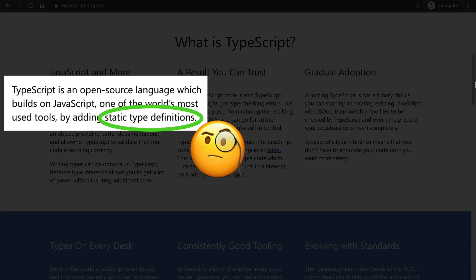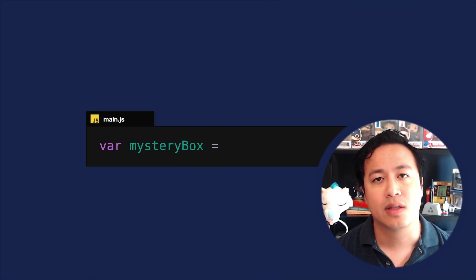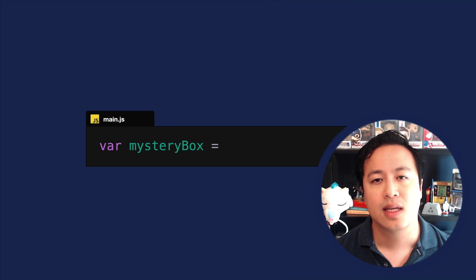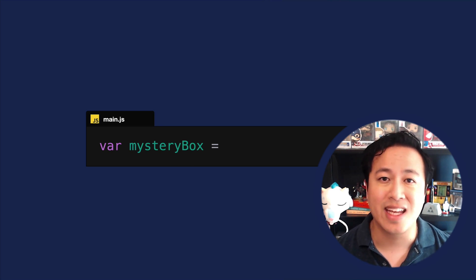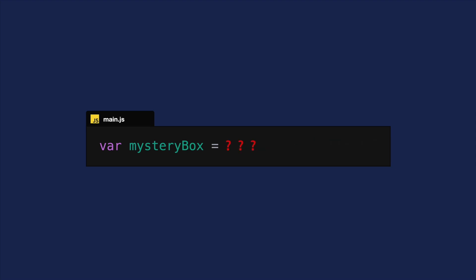Some of you might be looking at this definition and thinking: static type definitions. If you haven't worked with static types before, let's take a look at a normal JavaScript variable called MysteryBox. JavaScript, by default, is what is typically called a dynamically typed language, which means that variables can be assigned any type of value. That means our MysteryBox label could contain a string, number, boolean, array, object, or something else entirely.